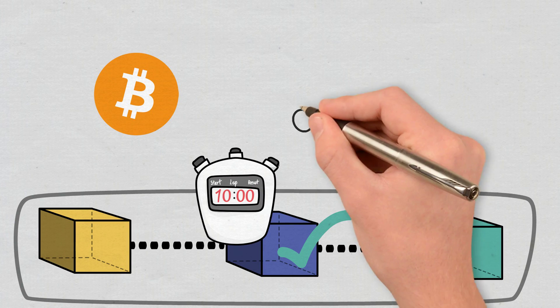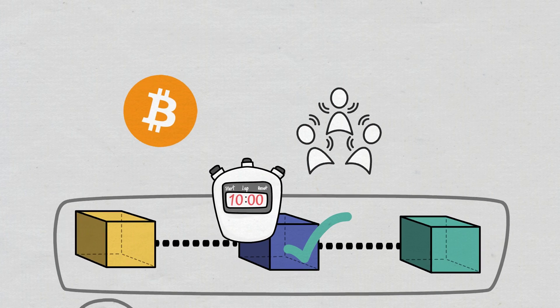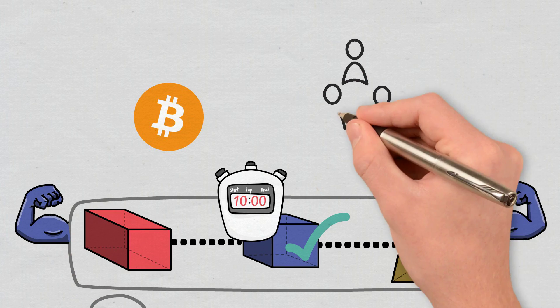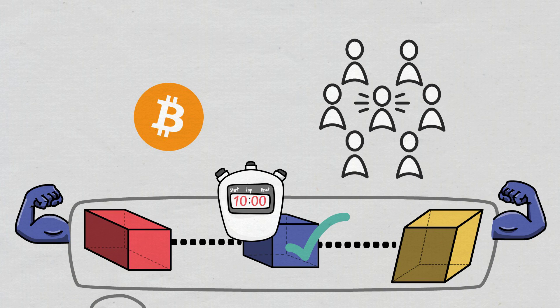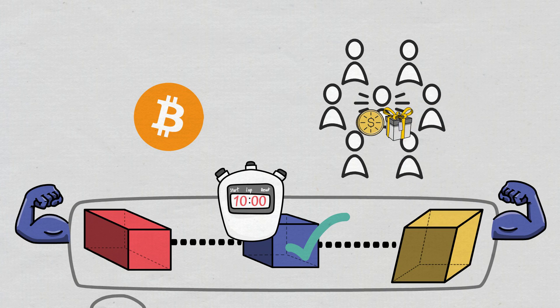But if the majority of the computing power on the network is controlled, an attacker could tamper with the confirmation process. They could stop all other miners from completing blocks, which would, in theory, give them the monopoly over the creation of new blocks, and, as a result, they could receive all the rewards.